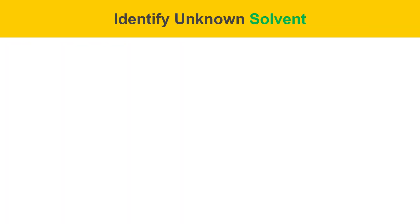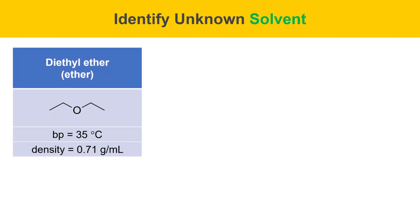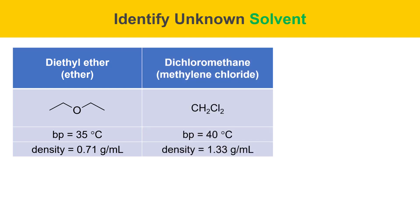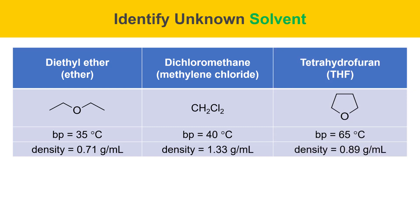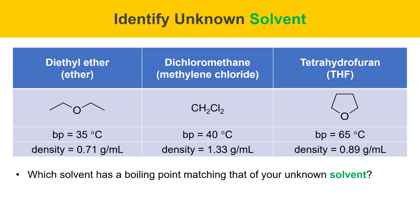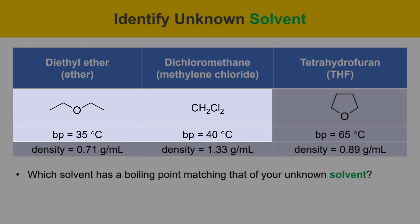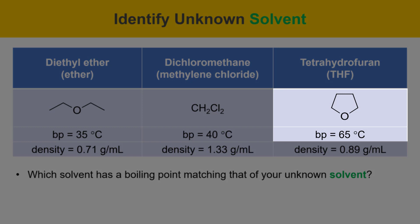Here's a guide for identifying the unknown solvent. There are three possible unknown solvents. Diethyl ether, also called ether, has a boiling point of 35 degrees Celsius and density of 0.71 g/mL — less than water. Dichloromethane, also known as methylene chloride (CH2Cl2), has a boiling point of 40 degrees Celsius and density of 1.33 g/mL — much higher than water. Tetrahydrofuran has a boiling point of 65 degrees Celsius and density of 0.89 g/mL — less than water but close. Diethyl ether and dichloromethane are so close in boiling point they are difficult to distinguish, while THF has a much higher boiling point that's easy to distinguish.